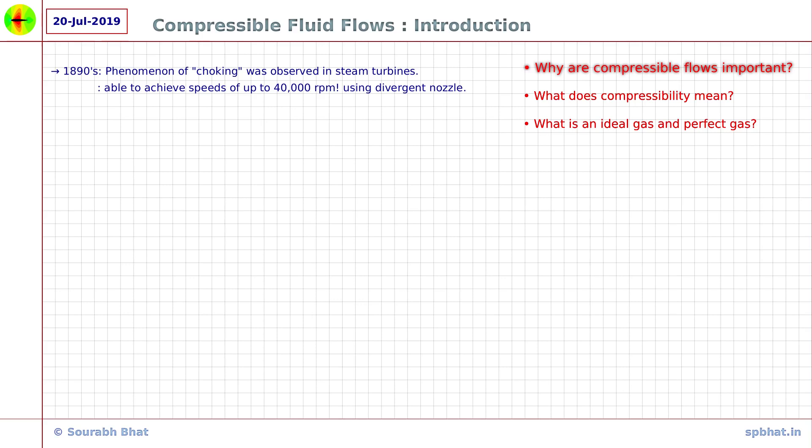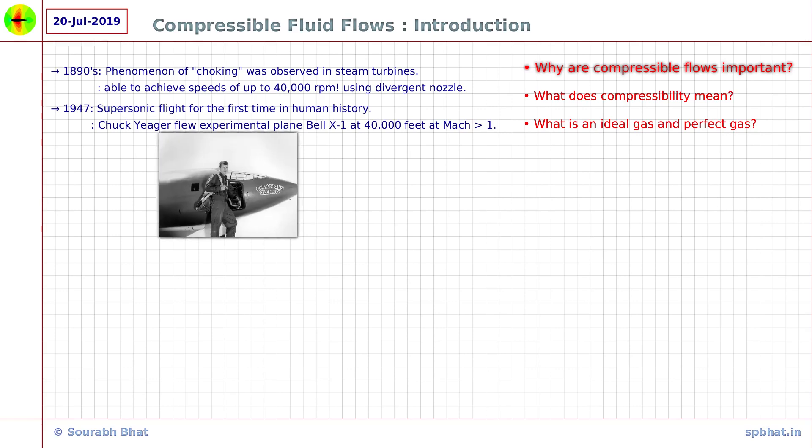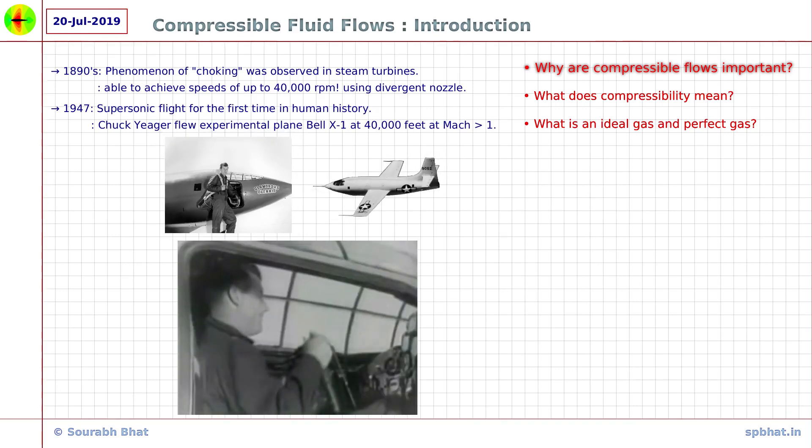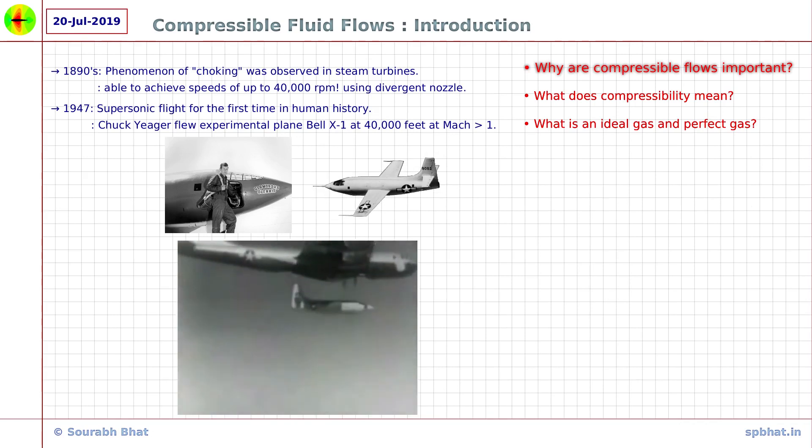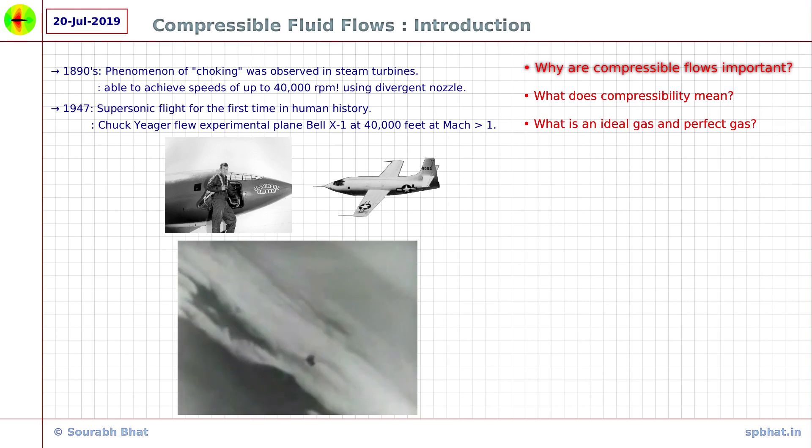Zoom forward to 1947. This year, for the first time, an experimental aircraft piloted by Chuck Yeager flew at supersonic speeds. Before this, it was considered impossible to break the sound barrier. The compressibility effects of air, considered in the design of aircraft body and engine, allowed us to cross the speed of sound.